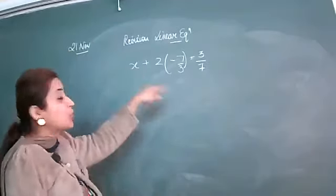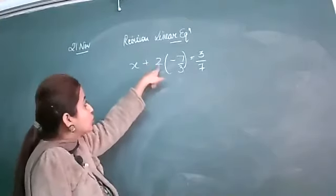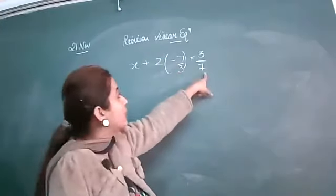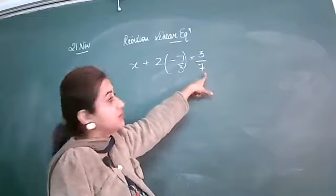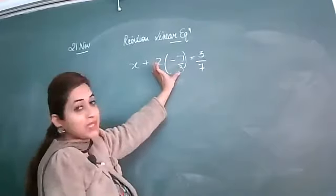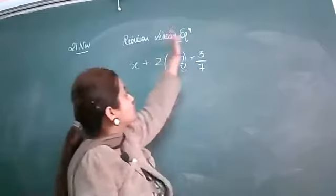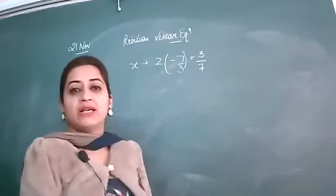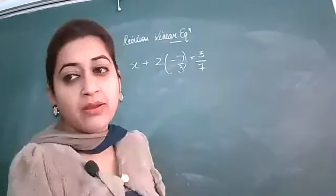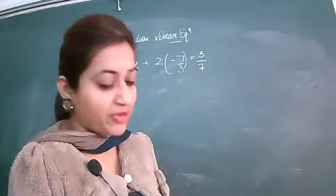The next question: what should be added? x should be added to twice of this rational number to get 3/7 as your answer. Multiply the terms, shift the constant to the right hand side, and from there you will get the missing number. That is example number 5.